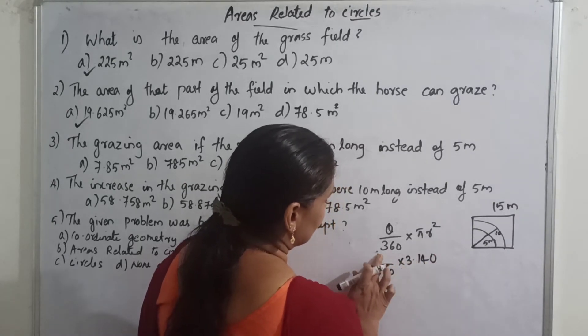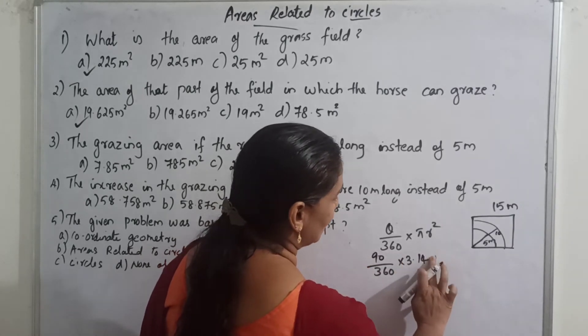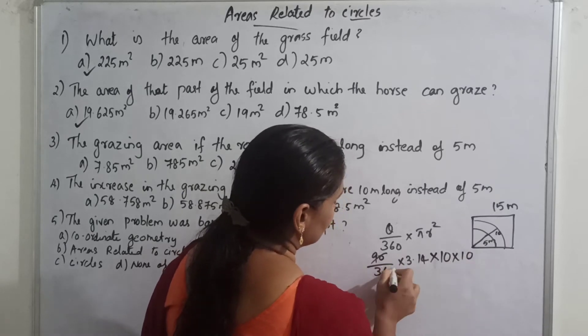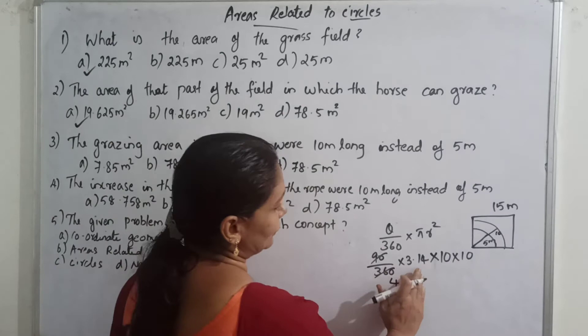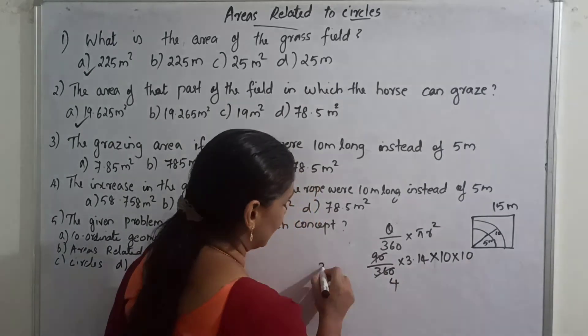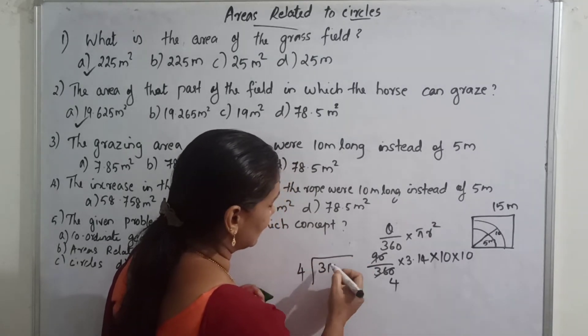So this is 90, 90 by 360 into 3.14 into radius 10 into 10, then we divide 3.14 into 10 into 10, then 314 divided by 4, then we divide here.